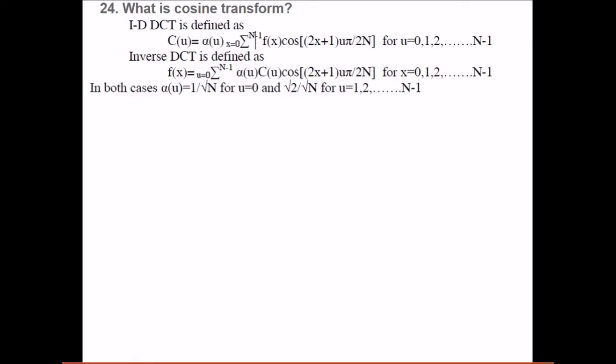What is cosine transform? Cosine transform is defined by alpha(u) sigma x from 0 to n minus 1, f(x) cos(2x+1)ux by 2n. And this inverse is just like we have seen in the earlier case. We have to multiply it by alpha u. Alpha u will come inside. Alpha u has specific value. Alpha u will be equal to 1 by root n if u equal to 0, and it will be for all other values, this alpha u will be equal to under root 2 by n.